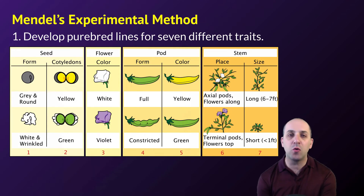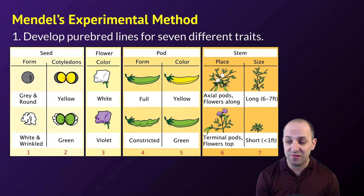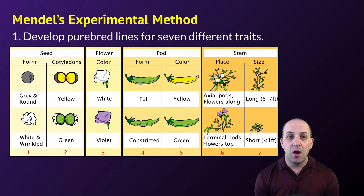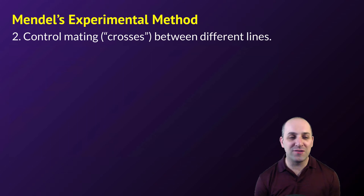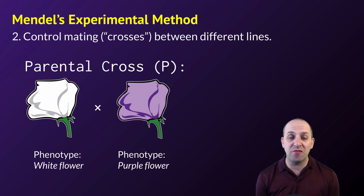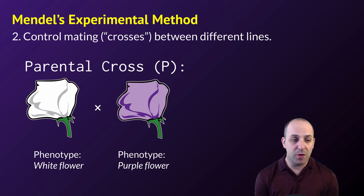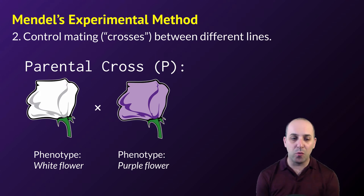What Mendel did was he developed pure lines — purebred lines, almost like purebred dogs — for seven different traits. He controlled the mating between the different lines, making what we call crosses. We're going to call the parental cross the P generation. We can see two plants: a purple flower phenotype and a white flower phenotype. And we're going to cross them.